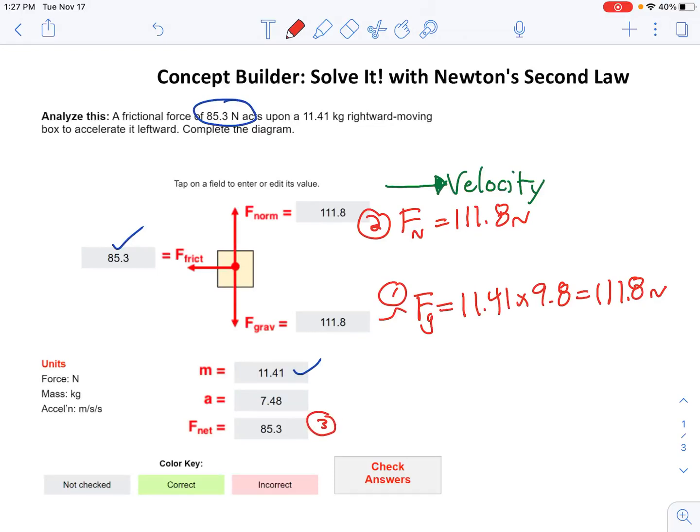The third thing you can conclude is that the net force is to the left, exactly like the problem we did today. And then the acceleration, the fourth step here, is the net force over the mass, which is 85.3 Newtons over 11.41 kilograms, which gives you 7.48 meters per second squared.